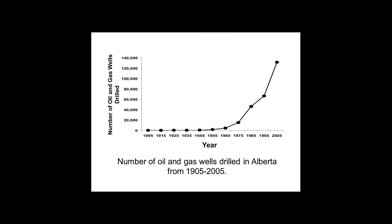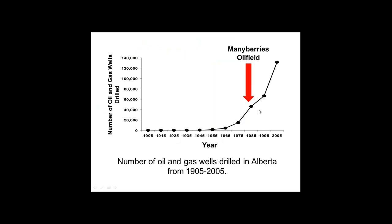One reason for decline is oil and gas activity. A graph of oil and gas wells drilled in Alberta shows the number really increased in the 1980s, which coincides with when the Many Berries oil field was put in — supporting about 400 active wells right in the middle of sage-grouse range in Alberta. This was developed before the detrimental effects on sage-grouse were well known and researched.